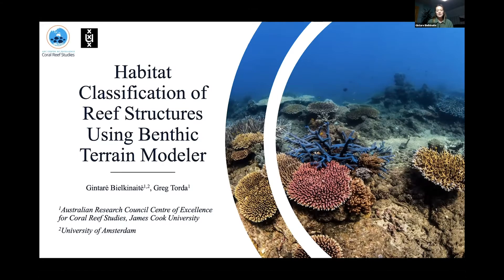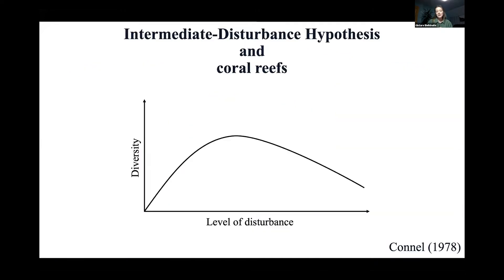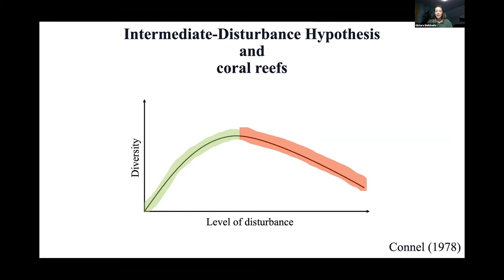We know that tropical coral reefs are subject to a variety of stressors and disturbances such as cyclones, coral bleaching, and crown-of-thorns starfish outbreaks. According to the intermediate disturbance hypothesis, disturbances actually maintain biodiversity. However, disturbances beyond that intermediate level will potentially degrade ecosystems, which begs the question how reefs will respond to these disturbances.